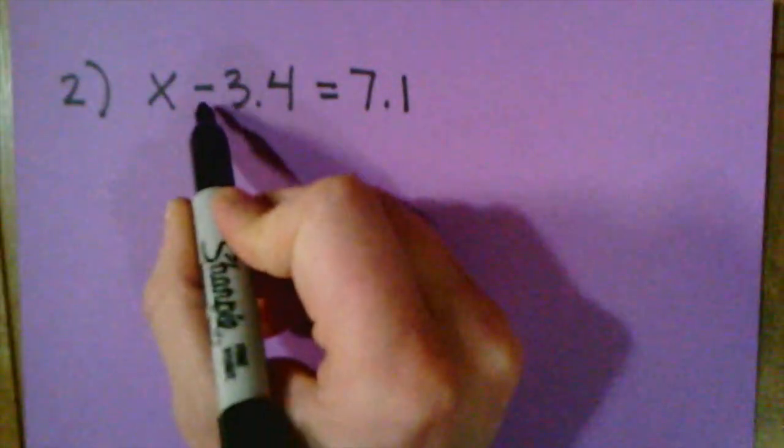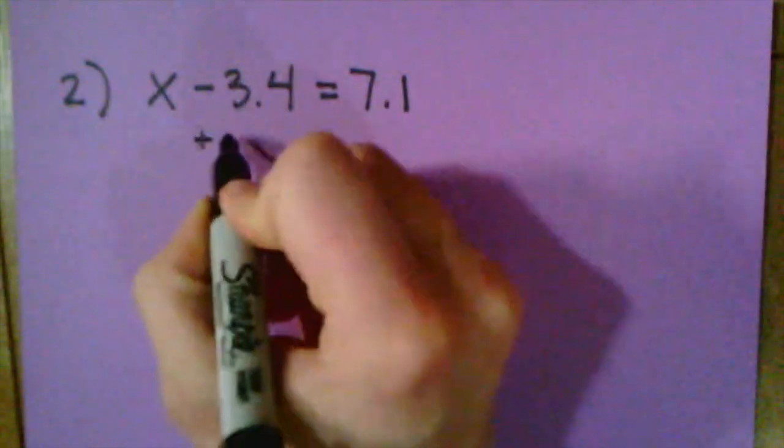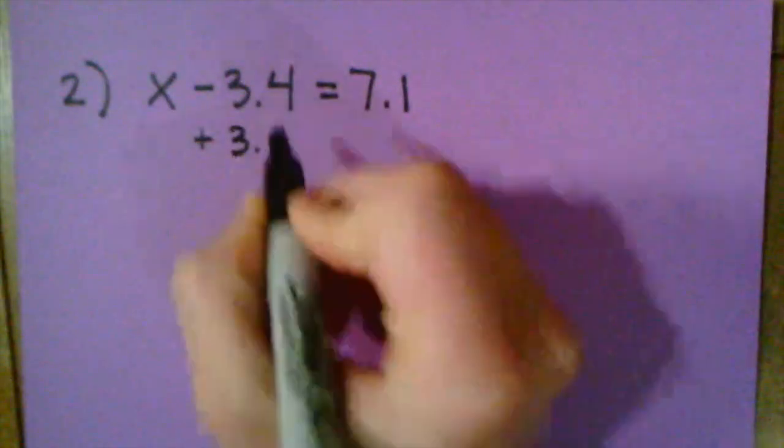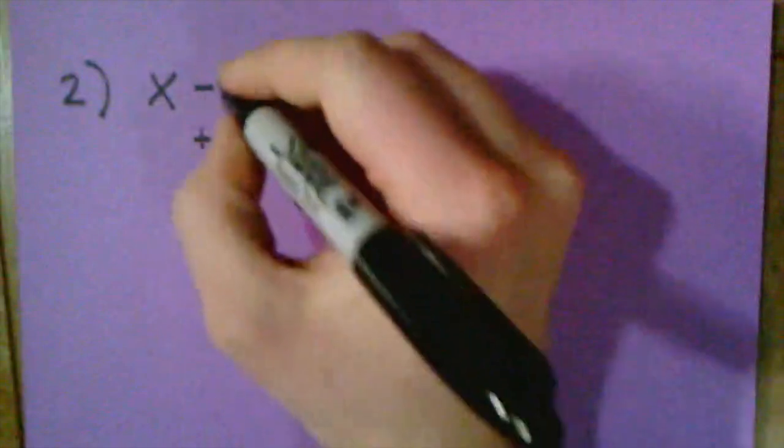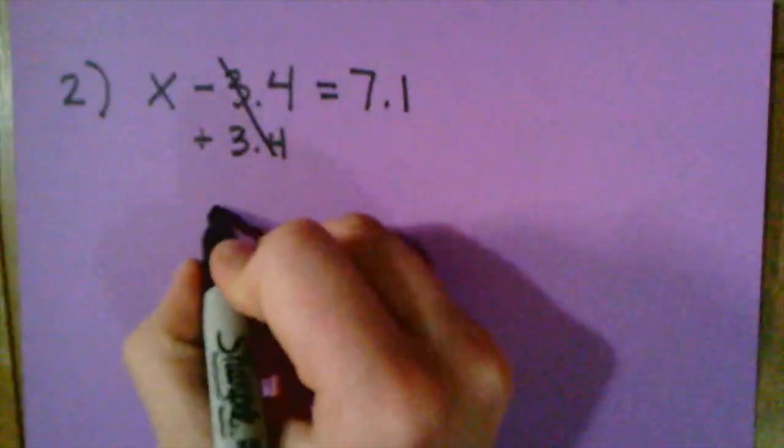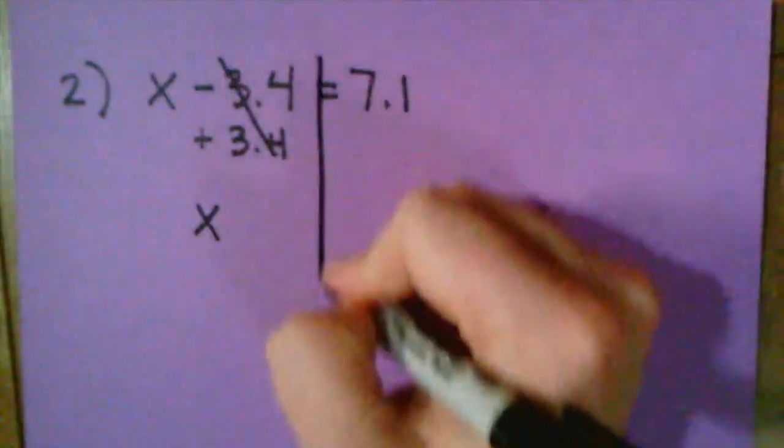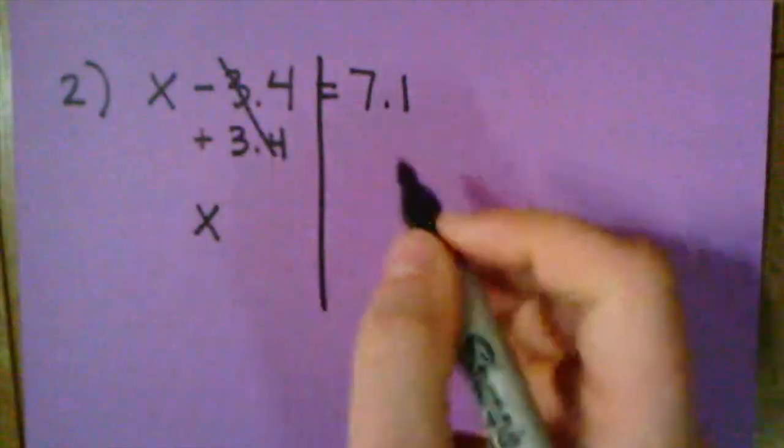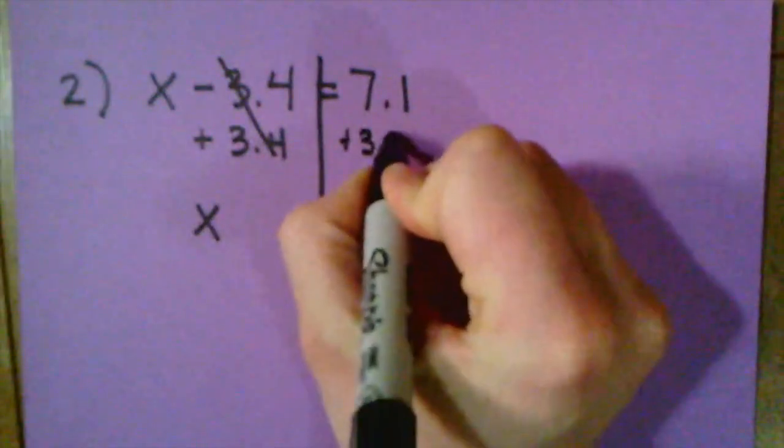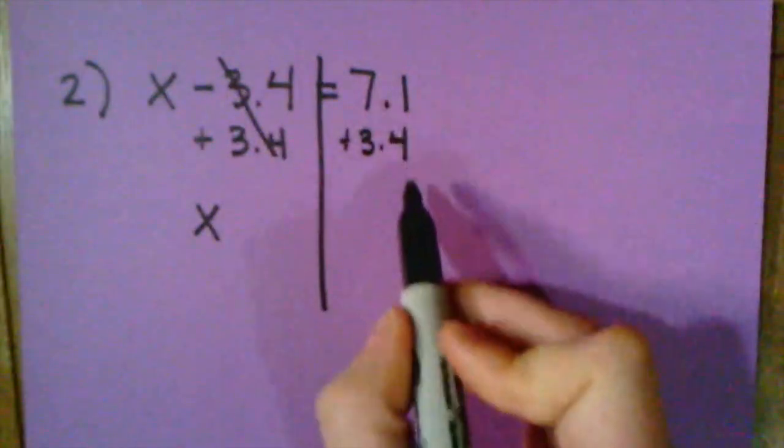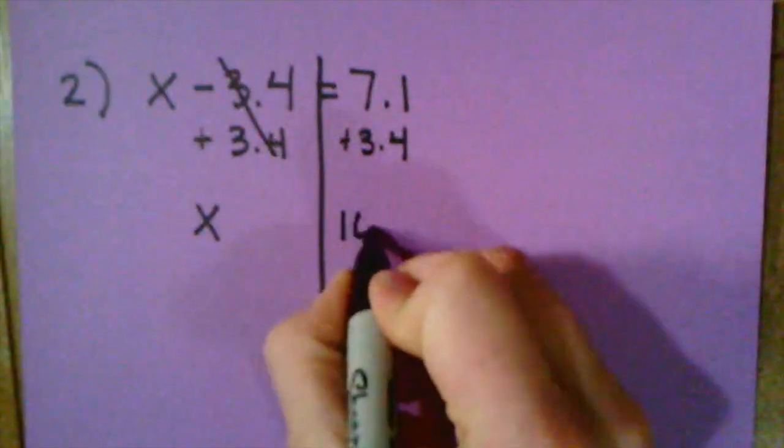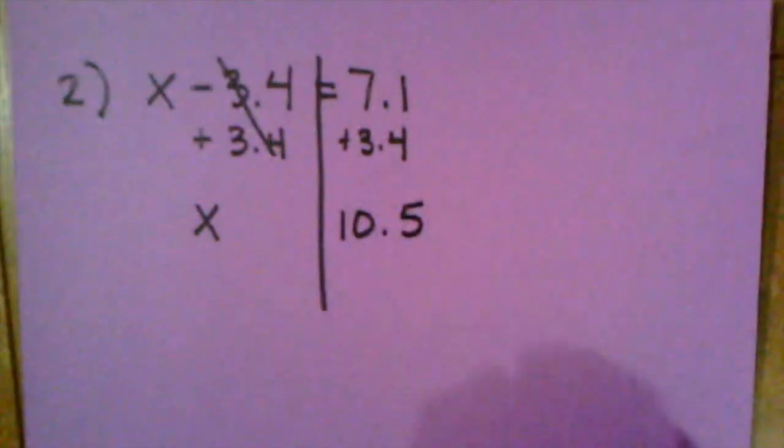So the opposite of subtracting would be adding. So if I add 3.4, a negative 3.4 and a positive 3.4 are going to cancel each other out and all I have left on this side is X. If I added 3.4 to the left side, I also need to add 3.4 to the right side. And now I can quickly go through this and I see that X is going to equal 10.5.